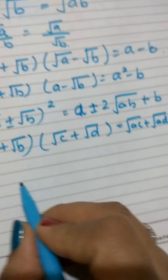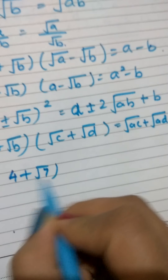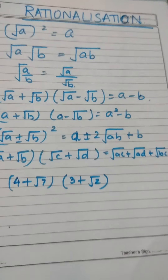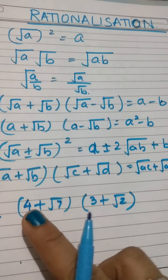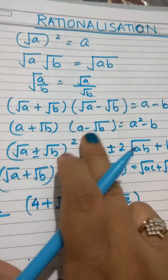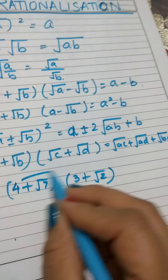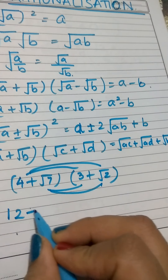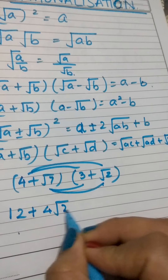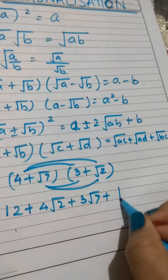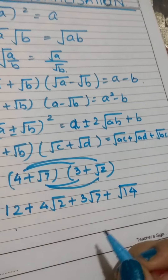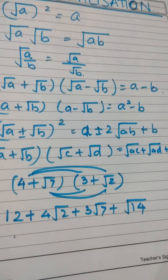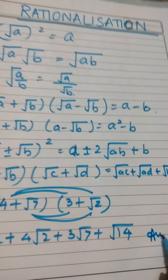Let me take one example. I have (4 + √7) multiplied with (3 + √2). One part is rational and one part is irrational. First, 4 is multiplied to both terms, then √7 is multiplied to both terms. So it becomes 12 + 4√2 + 3√7 + √14. Nothing is common here, so this is the answer.